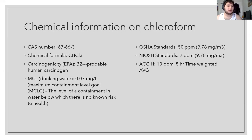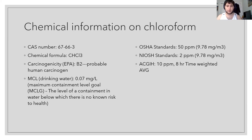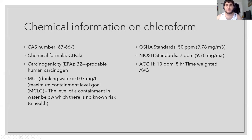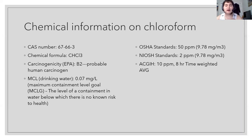Its carcinogenicity classification is B2 — a probable human carcinogen. The MCL for drinking water is 0.07 milligrams, which is how much chloroform would typically be found in drinking water at a level that will not cause any risk to the human body. At higher levels it becomes more dangerous and deadly. The OSHA standard is 50 ppm, or 9.78 mg per cubic meter, with a 10 ppm eight-hour time-weighted average.